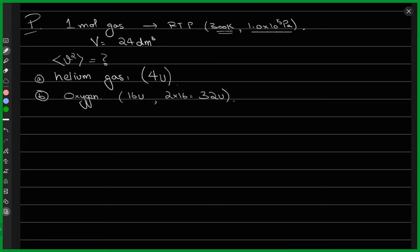Can anyone tell me how to compute this root mean square velocity? We have pressure, temperature, and volume that this gas is occupying at these conditions. Anyone remember anything from the last lecture about how to go about this problem? By the way, is the statement of the problem clear to everyone?